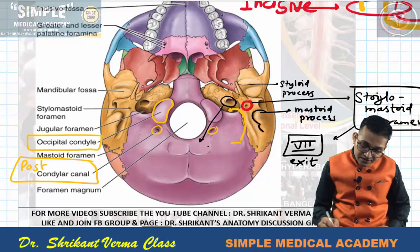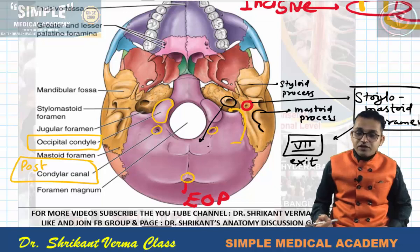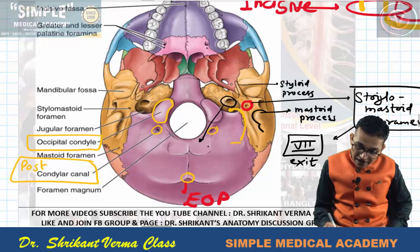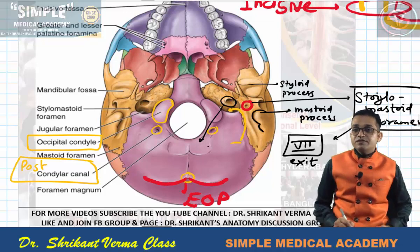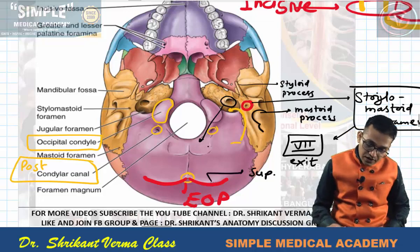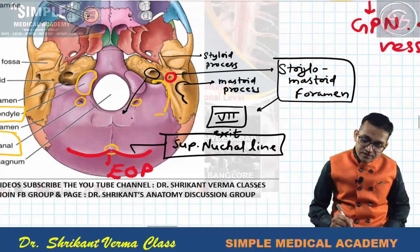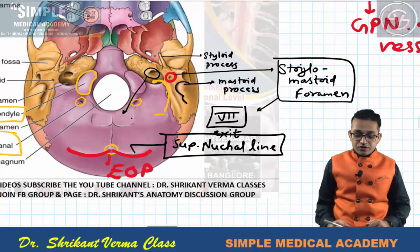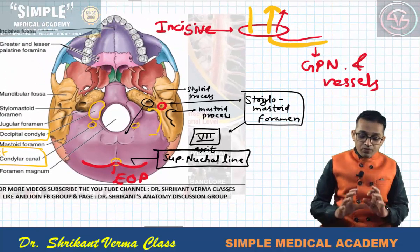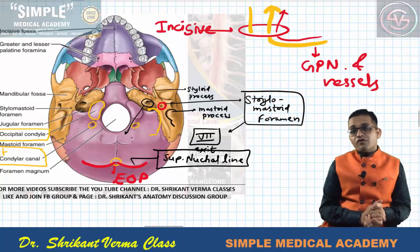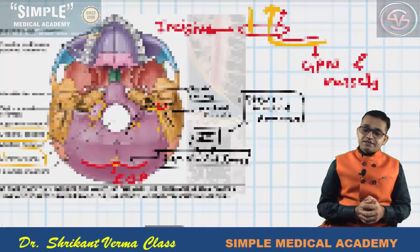There is one bony elevation known as the external occipital protuberance, which will be discussed later in the origin of the trapezius. The line extending laterally from this external occipital protuberance is the superior nuchal line. The medial one-third of this superior nuchal line also gives origin to the trapezius, to be discussed in the upper limb part. These are important bony landmarks for first-year viva and MCQ entrance exams.